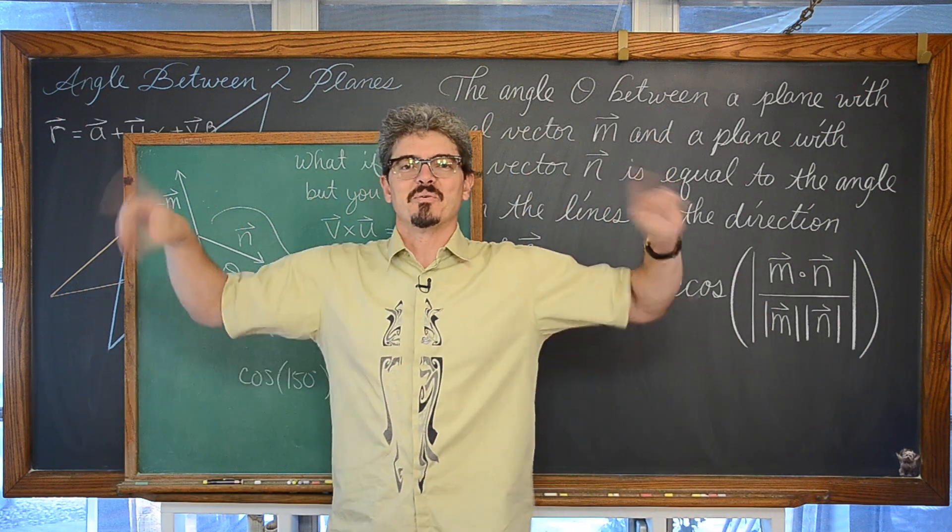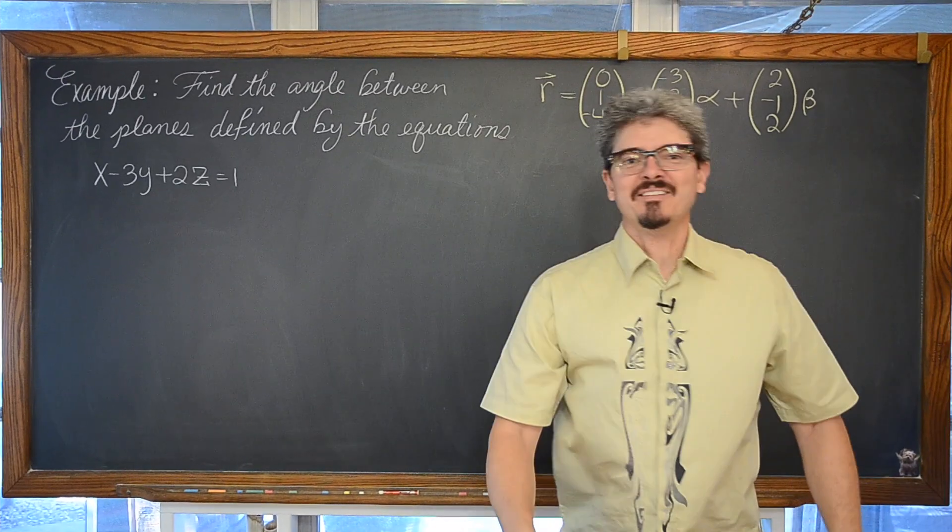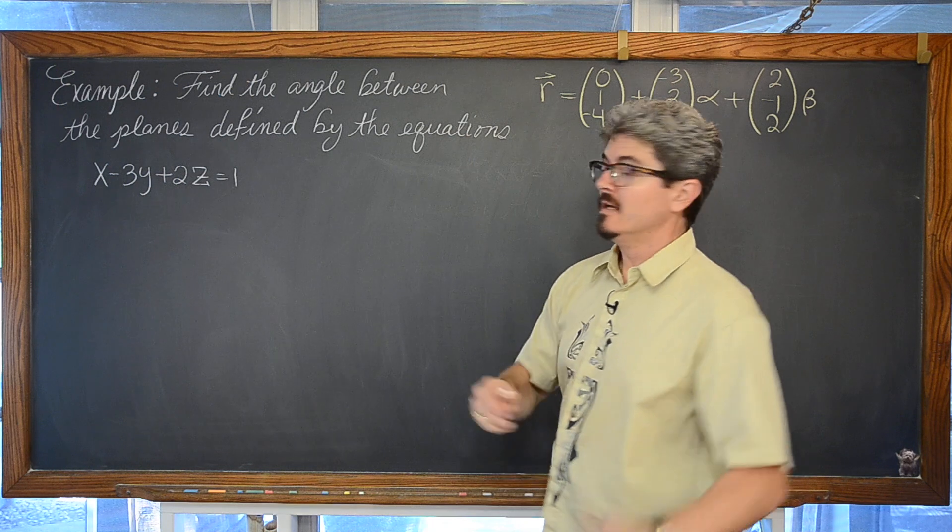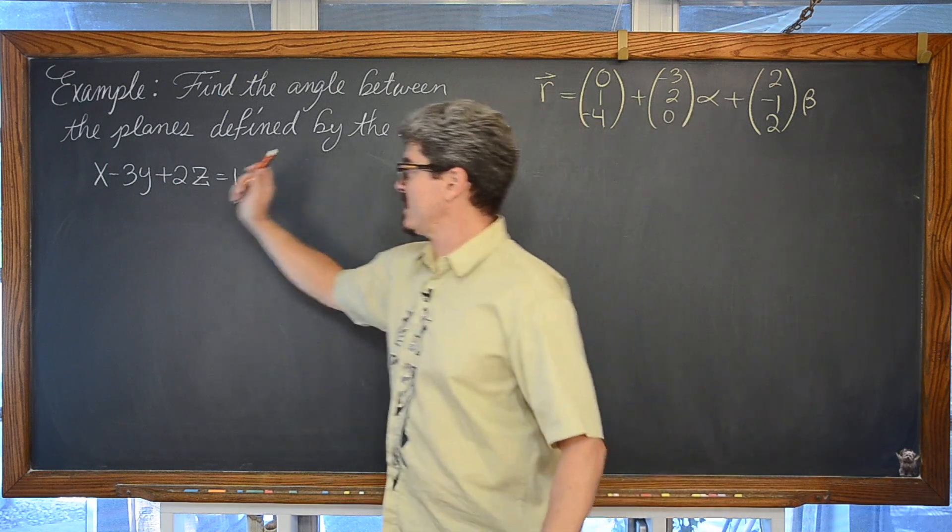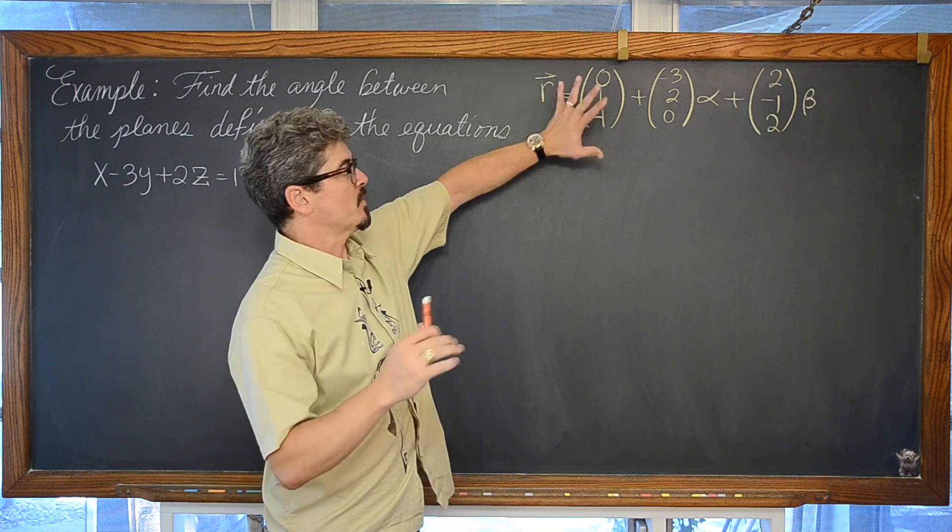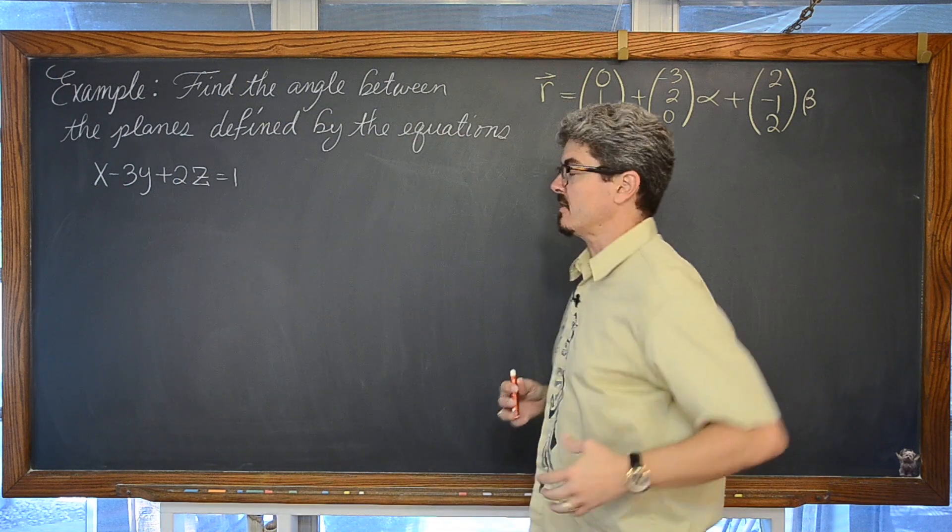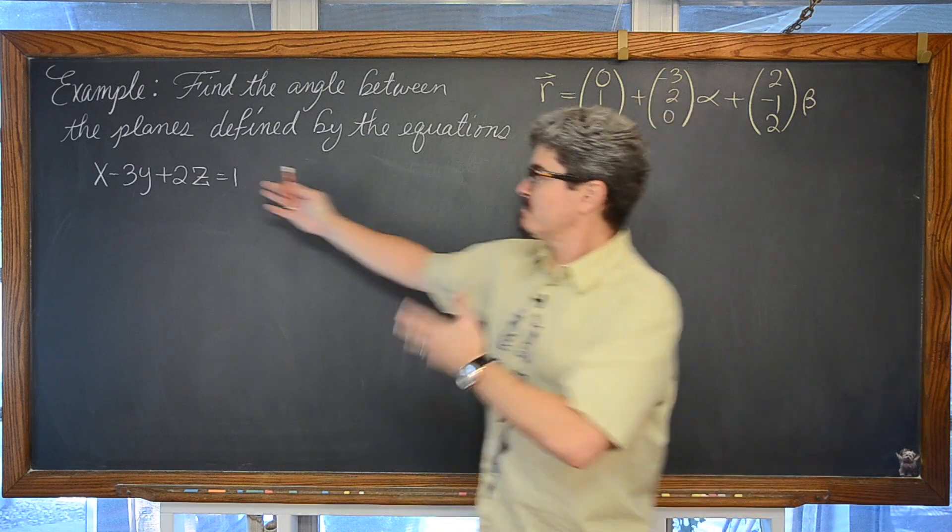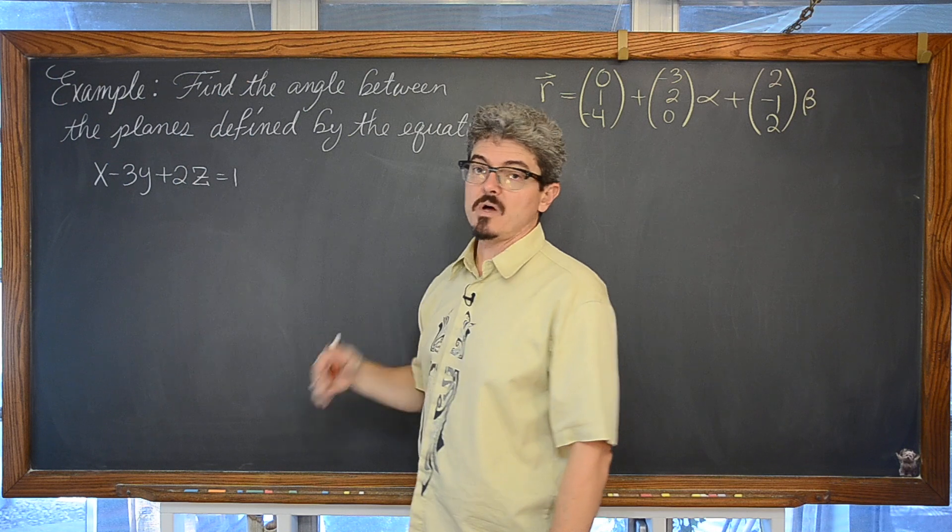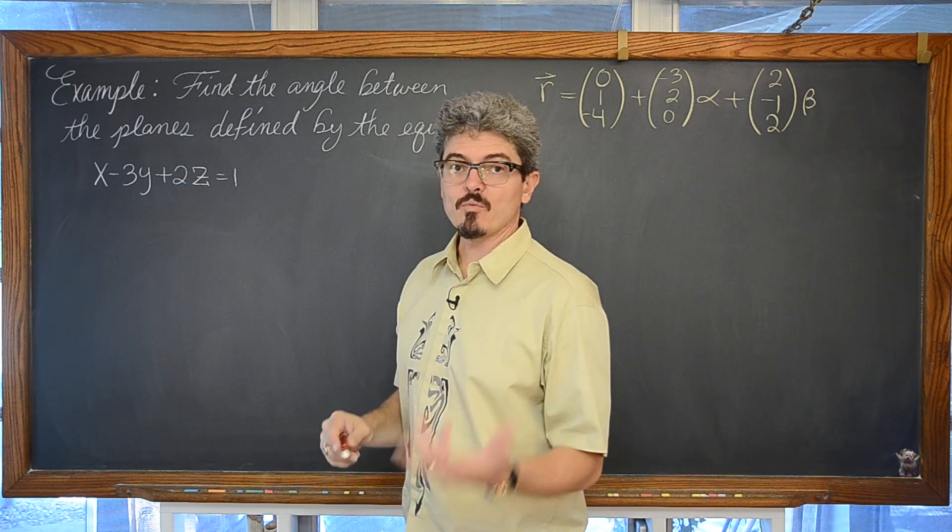Let's take a look at our first example. We're going to find the angle between the planes defined by a couple of equations in different formats. We have one here that is in Cartesian format and we have one here that's in our standard vector form for the equation of a plane. Our plane x minus 3y plus 2z equals 1 is given to us in Cartesian format.